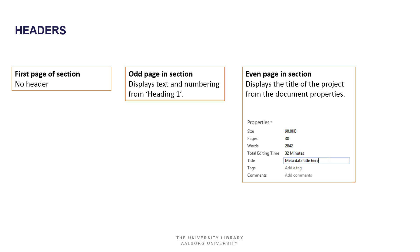The headers and footers — the top and bottom of the page — work as follows: on the first page of a section there is no header. On odd pages in the section, it displays the text and numbering from the Heading 1 style, so your chapter number and chapter title appear in the header. On even pages in the section, the title of the project is displayed, which comes from the document properties — you can also edit it directly on the page and it will update the document properties as well.